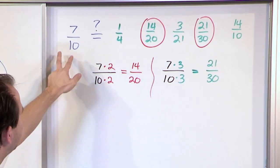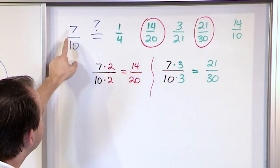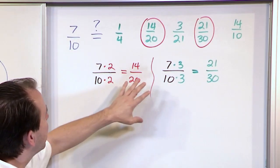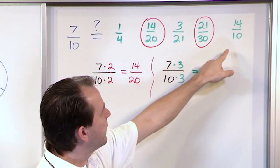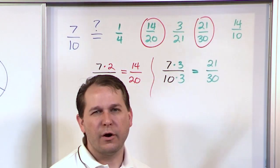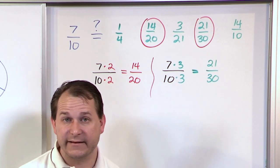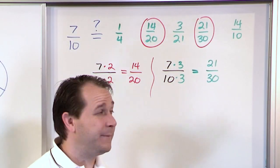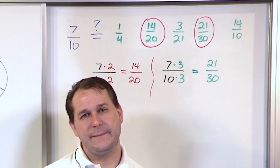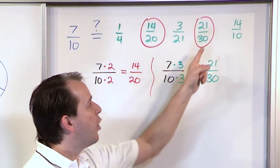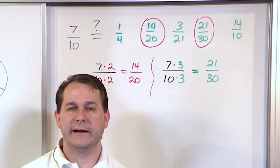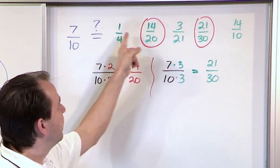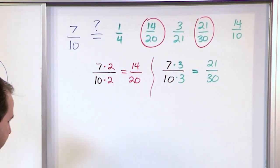Those are going to be the only answers, because when you're multiplying you need a multiple of 10 on the bottom. If I multiply by 4, I'd have 40 on the bottom; if I multiply by 5, I'd have 50 — neither of those is in the list. So the important thing to know is that 7 tenths is exactly the same as 14 twentieths, which is also exactly the same as 21 thirtieths. They all represent the same amount of pizza, even though they all look totally different.